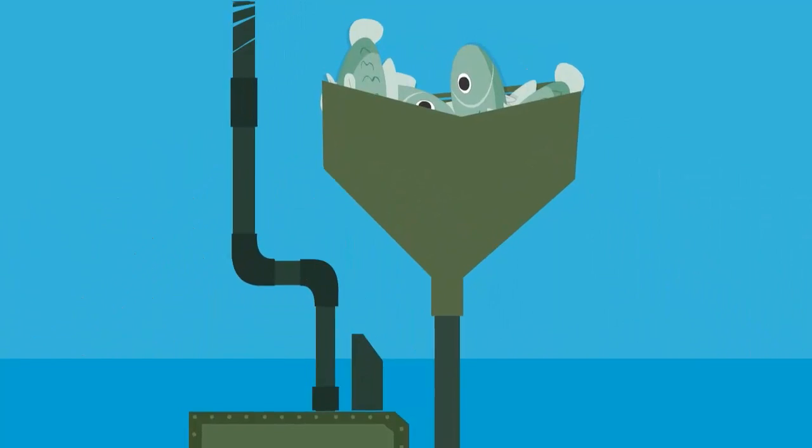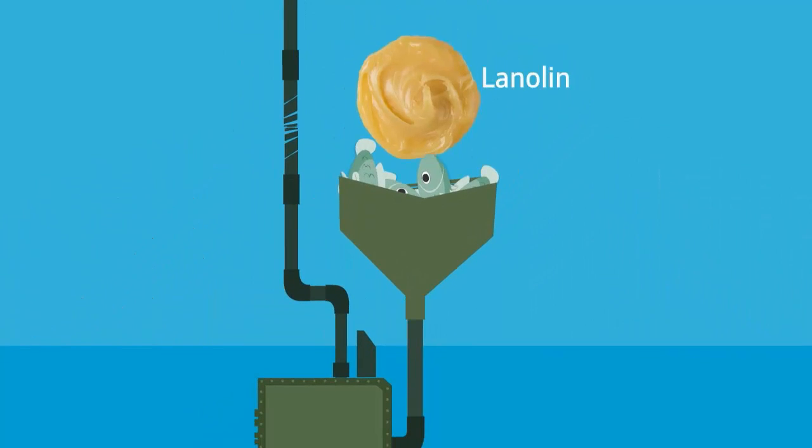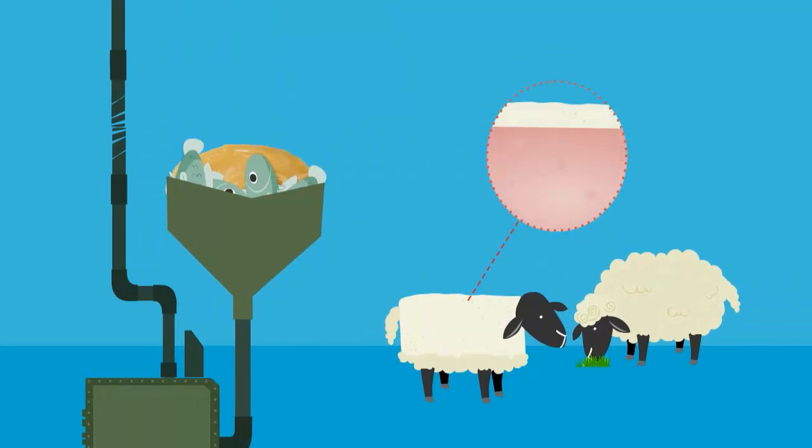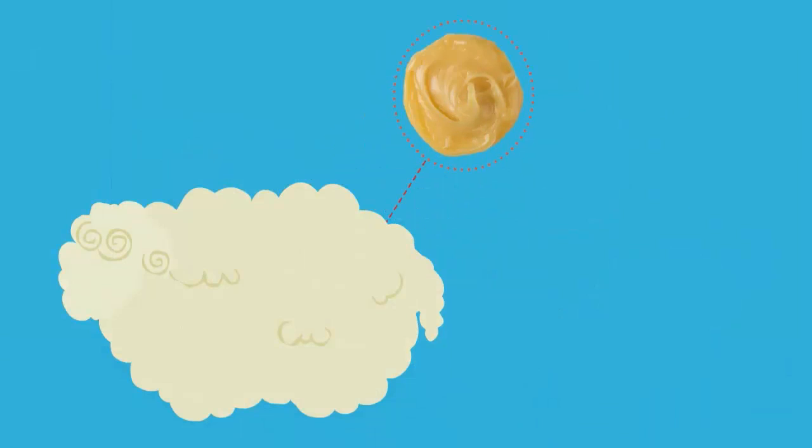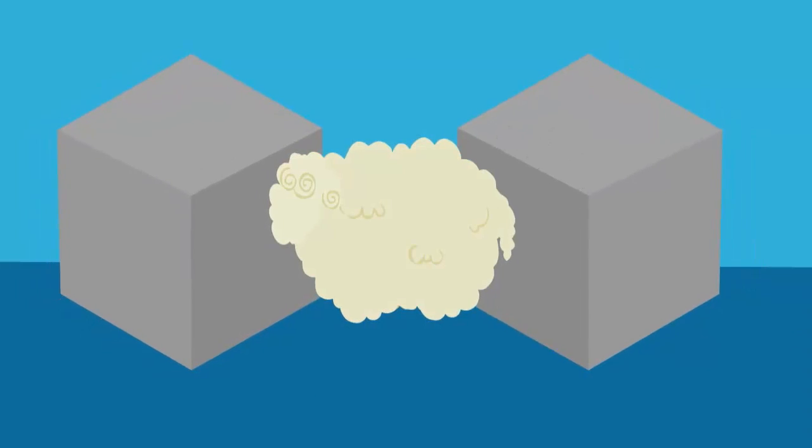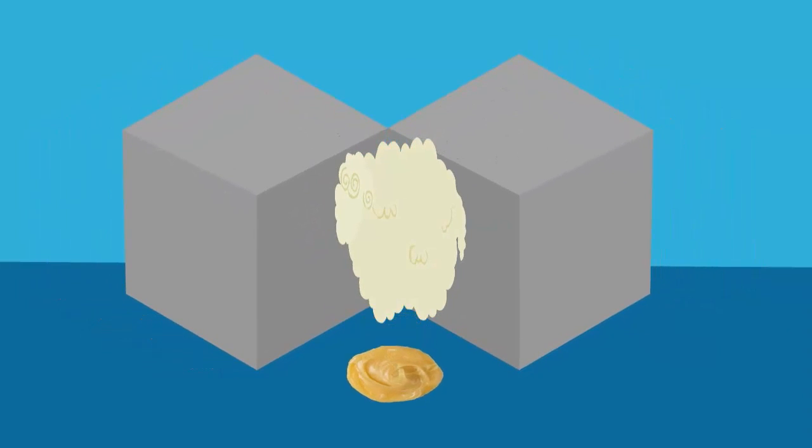They then need to process lanolin, which is a waxy substance that is secreted by glands found in a sheep's skin. In order to remove the lanolin from wool, the wool is rolled or squeezed, pushing out a yellowish, waxy substance.